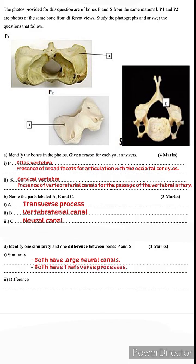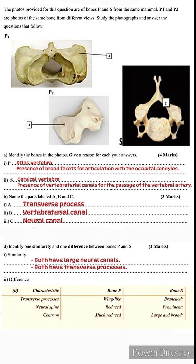On to the differences. Number one is with regards to the transverse processes. Even though they both have them, those of the atlas are wing-like, while those of the cervical vertebra are branched. This is another characteristic of cervical vertebrae: they have branched transverse processes. The neural spine of bone P is reduced while that of bone S is prominent. The centrum of bone P is much reduced while bone S has a large and broad centrum. And that is that.